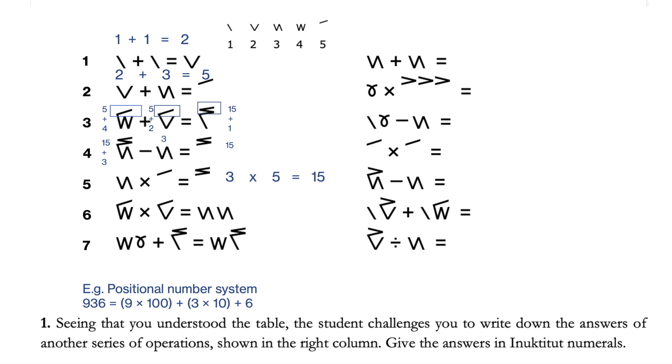For example, 936 equals 9 times 100 plus 3 times 10 plus 6. So in this case, when we go to the 10th digit, we multiply by 10. But in the question, when we go to the 10th digit, we multiply by 20.